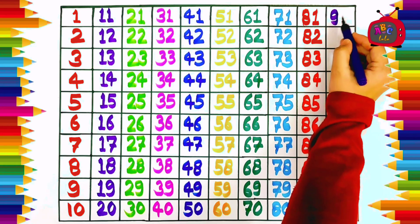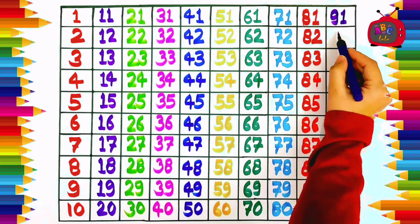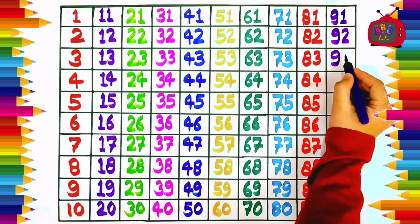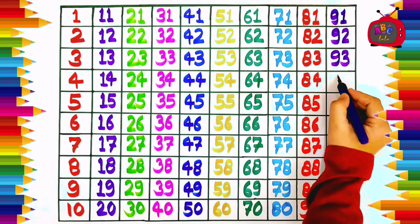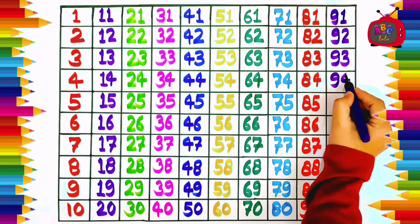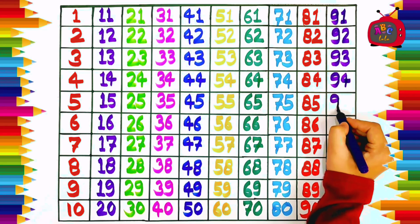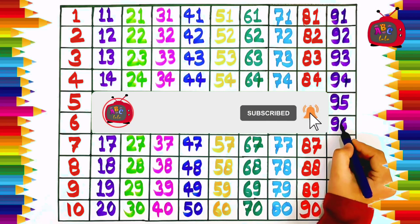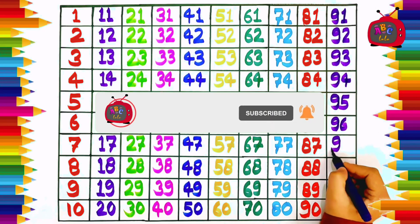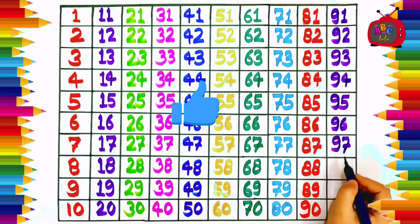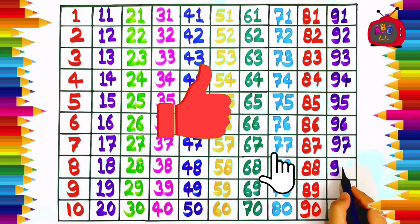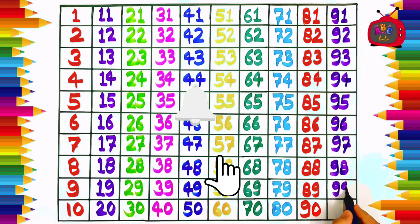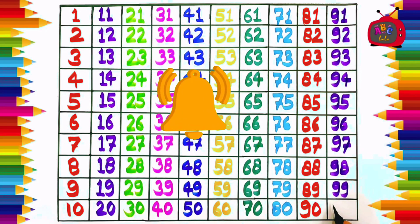Nine one, ninety-one. Nine two, ninety-two. Nine three, ninety-three. Nine four, ninety-four. Nine five, ninety-five. Nine six, ninety-six. Nine seven, ninety-seven. Nine eight, ninety-eight. Nine nine, ninety-nine. One zero, one hundred.